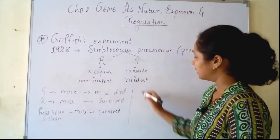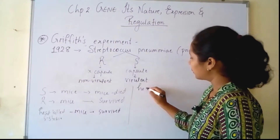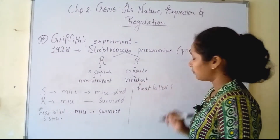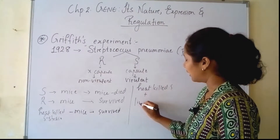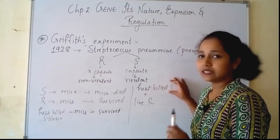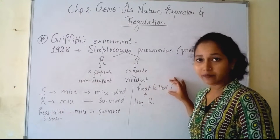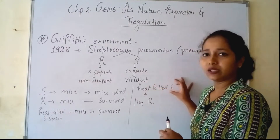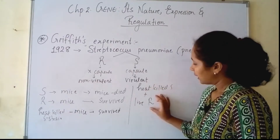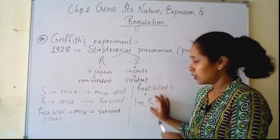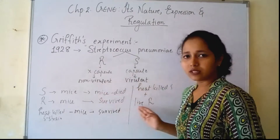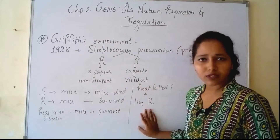After this, what he did was he took heat-killed S strain as well as live R strain together. The heat-killed S strain is not disease-causing because it has been killed by heat. And the R strain is rough strain, which is non-virulent — it is not capable of causing disease either.